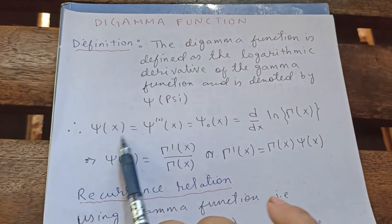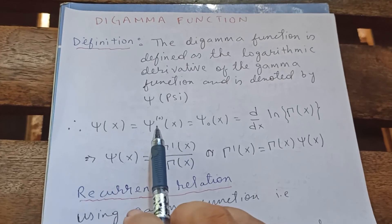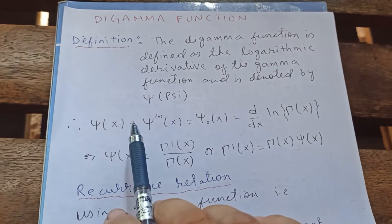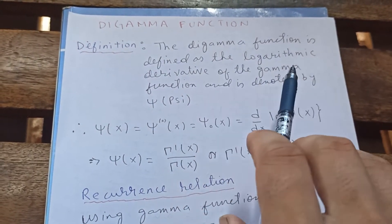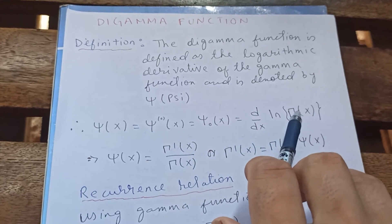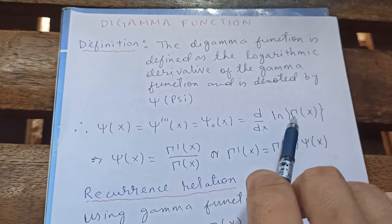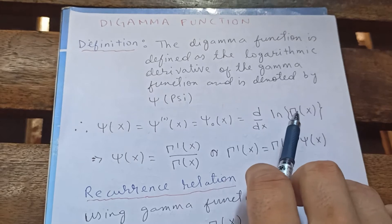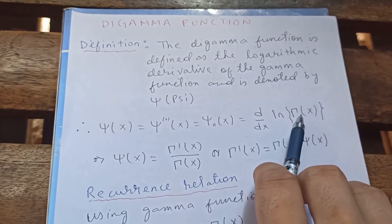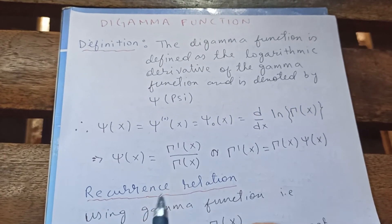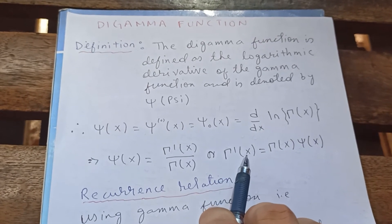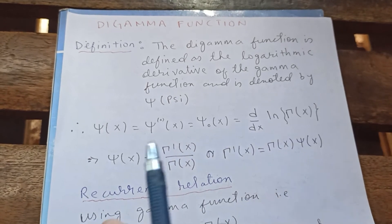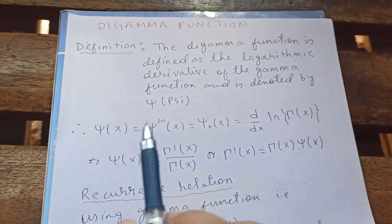All these notations represent the digamma function. This distinction becomes important when we deal with the polygamma function. From the definition, the digamma function is the derivative of the logarithm of the gamma function: ψ(x) = d/dx[ln Γ(x)]. Differentiating, the derivative of ln Γ(x) gives Γ'(x)/Γ(x), so we can write Γ'(x) = Γ(x)·ψ(x). This is an important result.